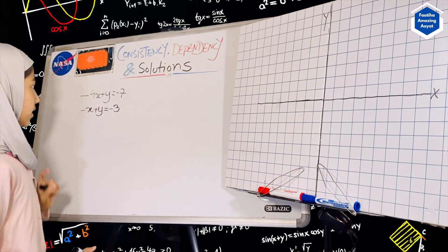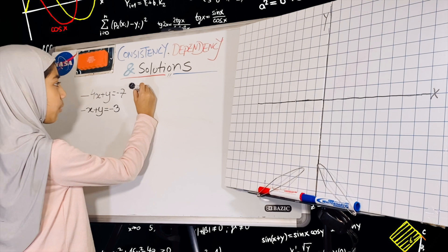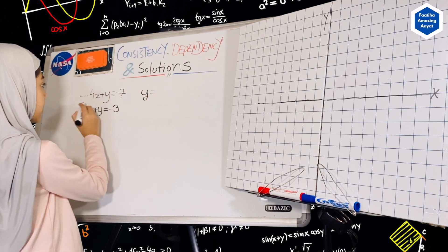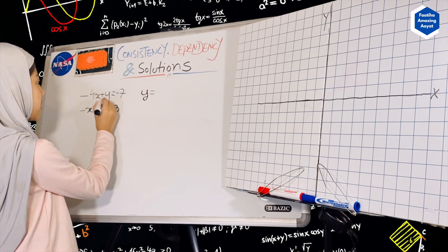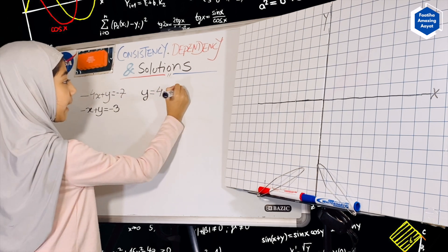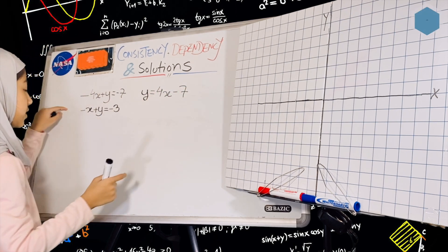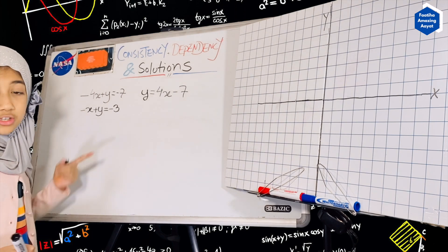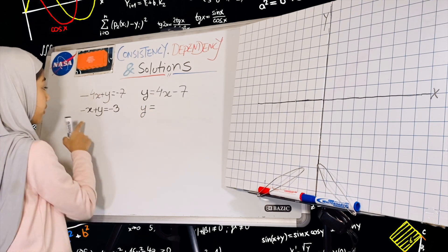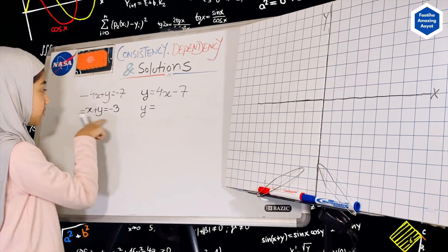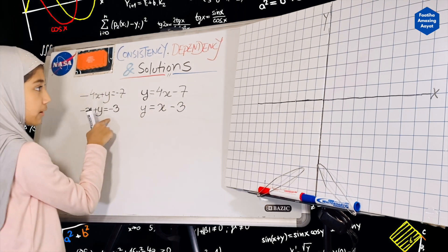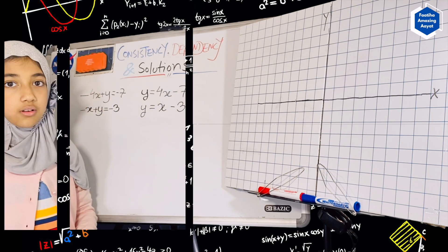So let's transform these into Y-intercept form. First, I'm going to work with the first equation. I'm going to keep Y on this side, and take the minus 4X to the other side by adding it to both sides, which means there's going to be 4X, and then minus 7. Now for our second equation, Y is equal to — we add X to both sides, so it becomes X minus 3. So these are our two Y-intercept forms.